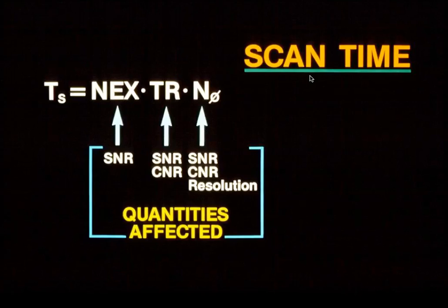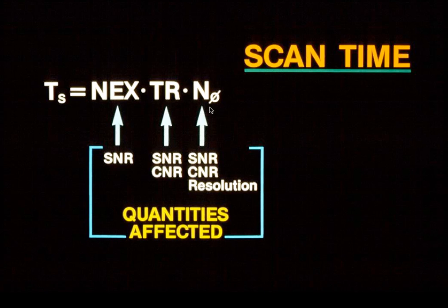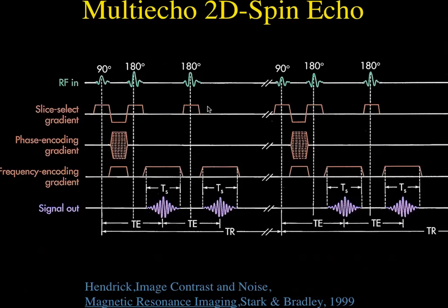The longer the T1, the longer we have to wait for recovery. Scan time with standard imaging is TR times the number of phase encodings. If you signal average, say two NEX, that doubles the amount of time, so it's NEX times TR times the number of phase encodings. It was recognized early on that maybe we could be more efficient if we got two images for the price of one.